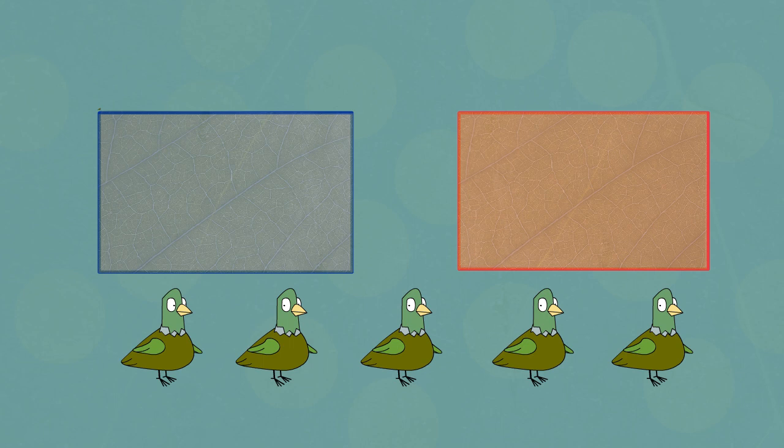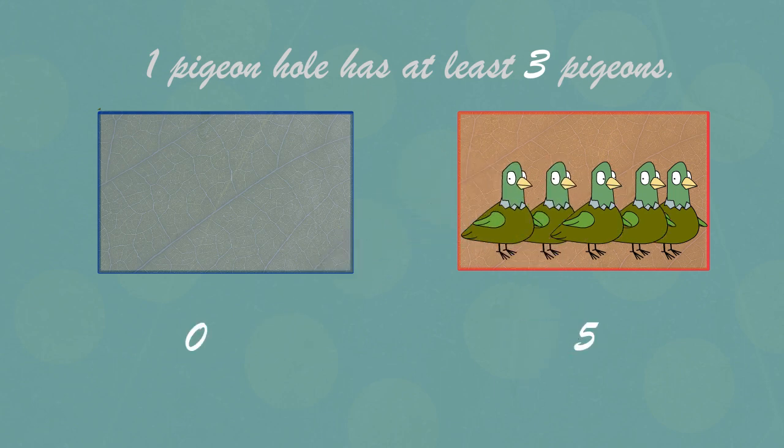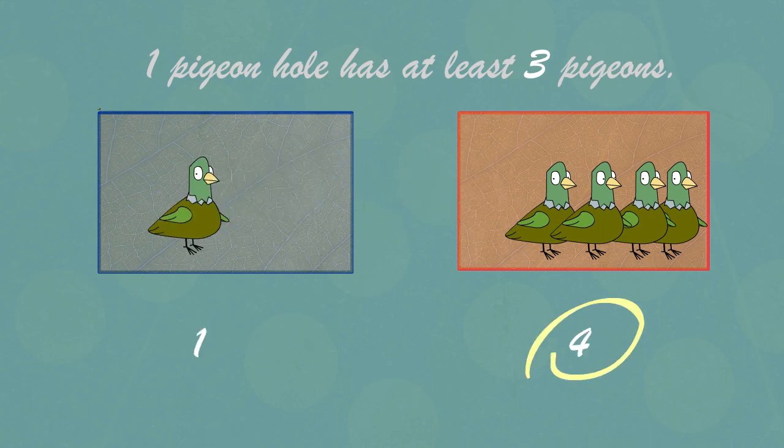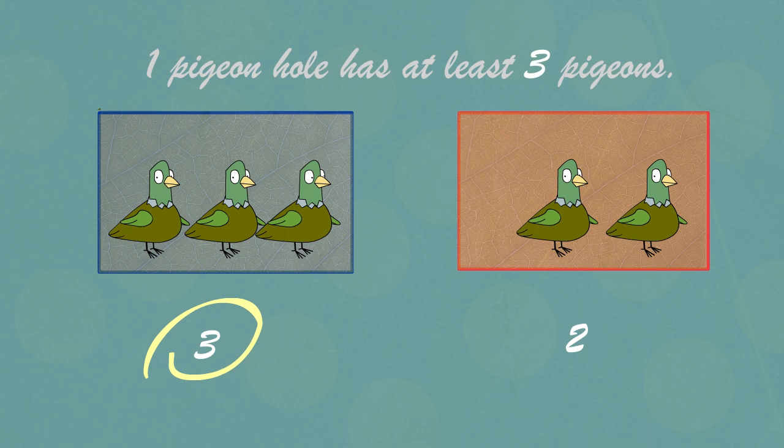If we have two pigeonholes and five pigeons, it is promised that one pigeonhole has at least three pigeons. Yep, that's greater than three. Yep, still greater than three. That's three. Yep, see, I told you.